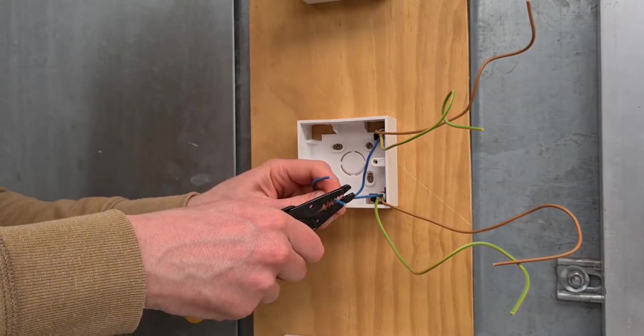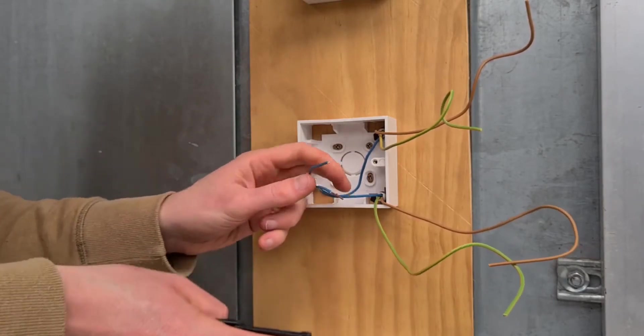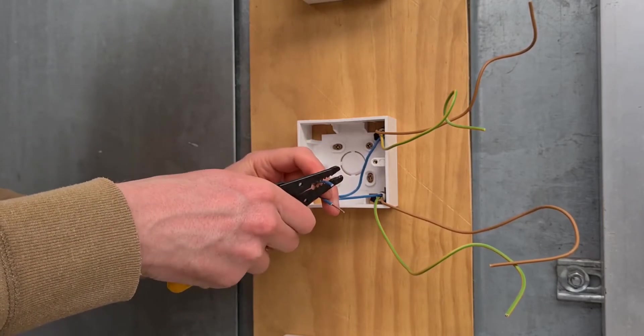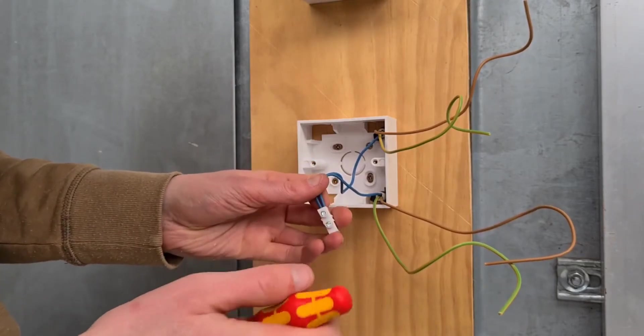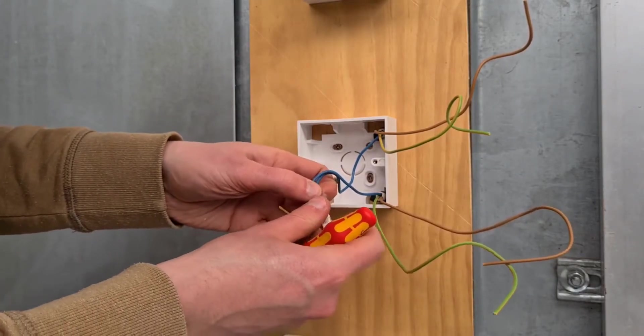The light switch is a one gang, one way switch. One gang means there is only one switch on this switch plate, and one way means the lights can only be turned on and off from one light switch.